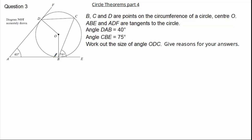Let's move on to the next question. Here it states B, C, D are points on the circumference of a circle with centre O. We know ABE and ADF are tangents to the circle. We are given angle DAB to be 40 degrees and angle CBE to be 75 degrees. We are asked to calculate angle ODC and we must give reasons for our answer. Why not give it a go and press pause if you need.